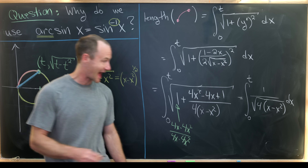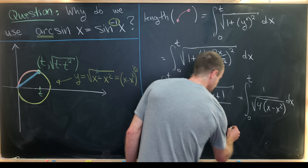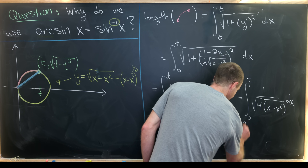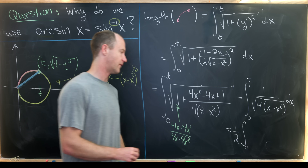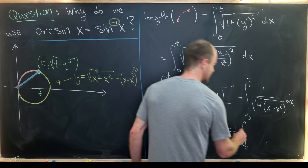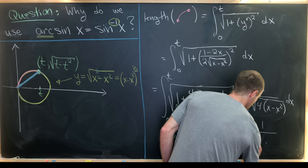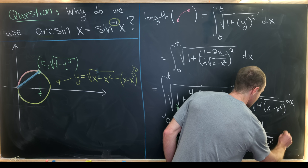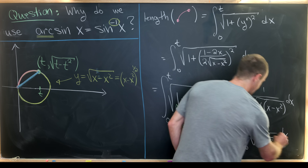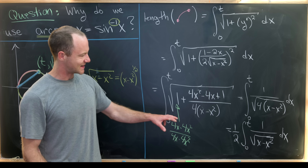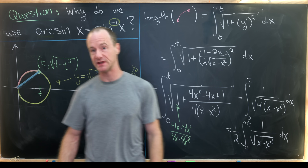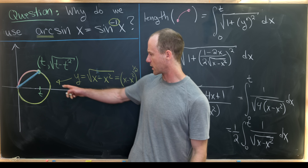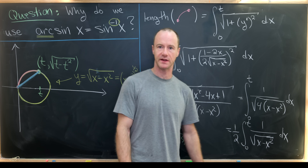Taking the square root of 4 out front gives a factor of one half, leaving us with one half times the integral from 0 to t of 1 over the square root of x minus x squared, dx. That's a nice clean formula for the length of this arc ending at our arbitrary point.